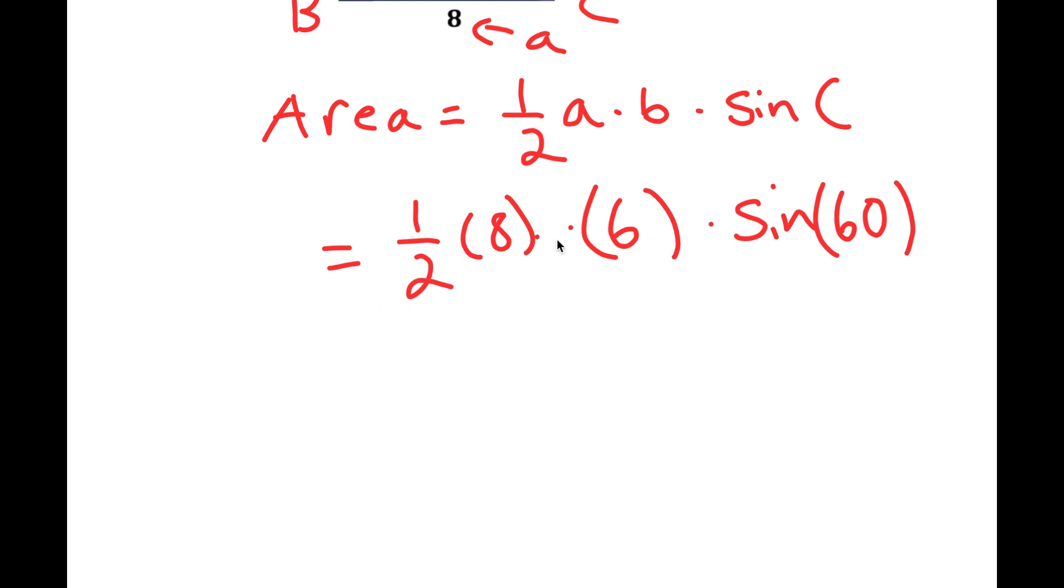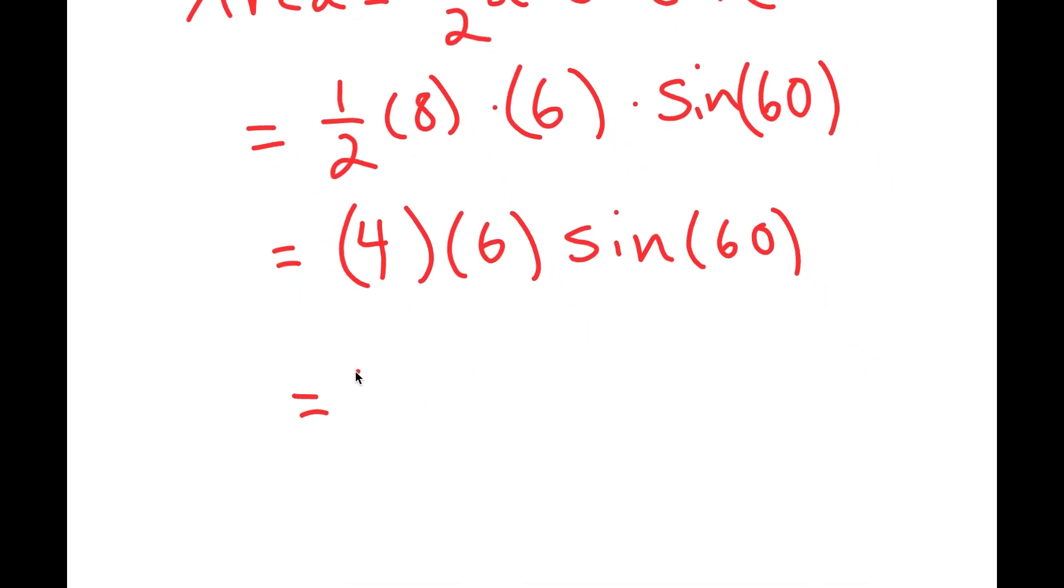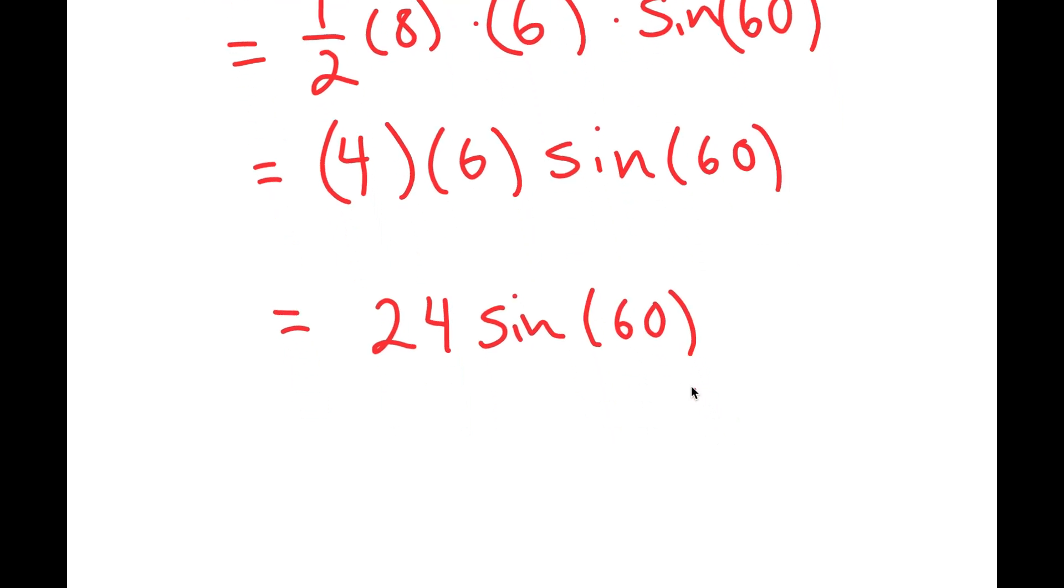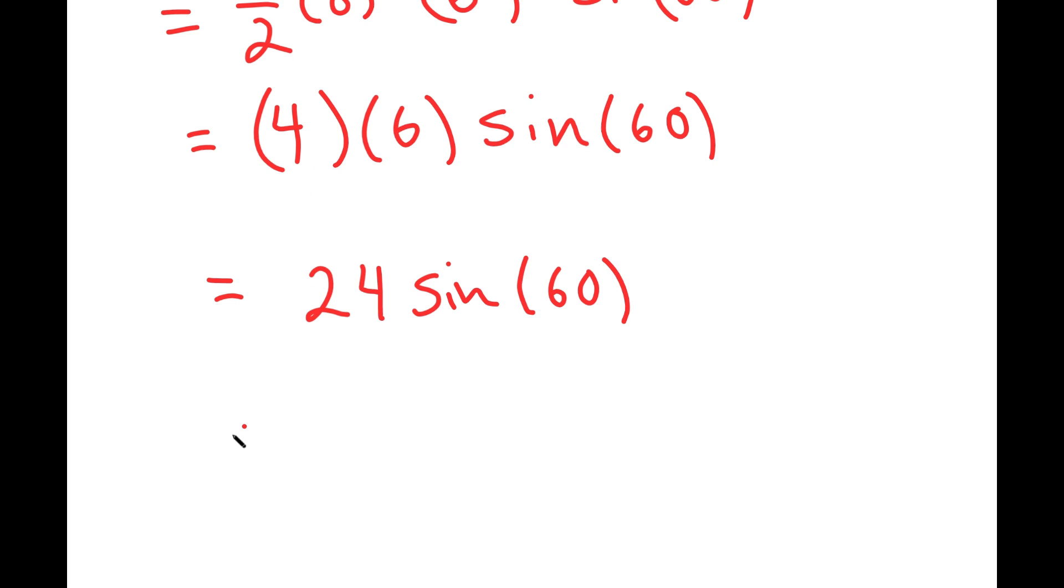Now, one-half times 8 times 6 is equal to, one-half of 8 is 4, so I get 4 times 6 times sine of 60, which is equal to 24 times sine of 60. And so I have 24 times sine 60, and this is going to equal 12 root 3. So this is my area.